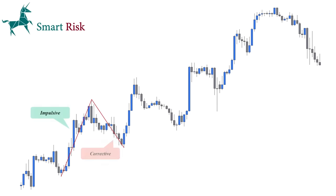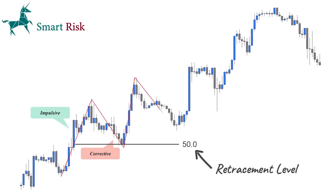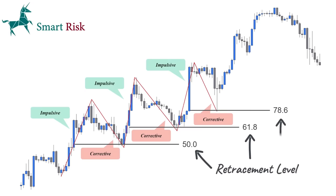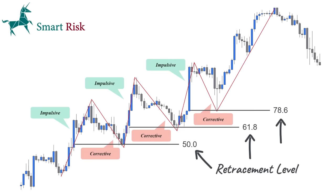Fibonacci retracement levels are used in technical analysis to predict potential levels of supply and demand before impulsive moves occur during a trending market. However, they should be used in combination with other forms of analysis to make well-informed trading decisions.